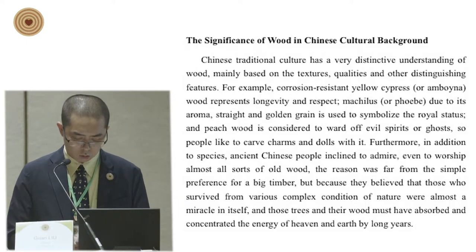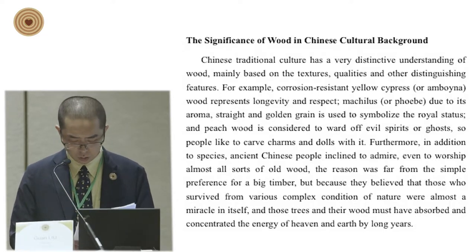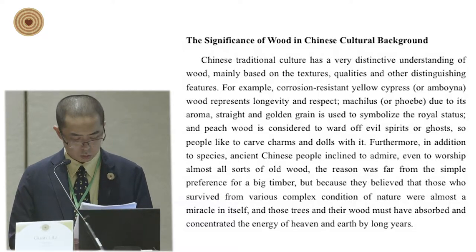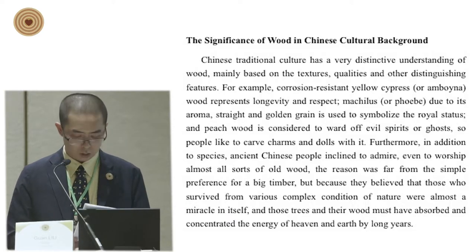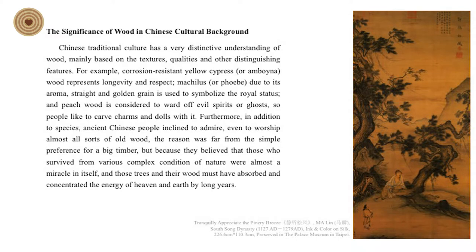Furthermore, in addition to species, ancient Chinese people were inclined to admire and even worship almost all sources of old wood. The reason was far from a simple preference for big timber, but because they believed that those which survived various complex conditions of nature were almost a miracle in themselves, and those trees must have absorbed and concentrated the energy of heaven and earth over long years. Therefore, at least from the northern Song dynasty, aristocrats and bureaucrats preferred to transplant old trees with distorted and dragon-like trunks or branches to improve the symbolic ambience in their gardens and courtyards.